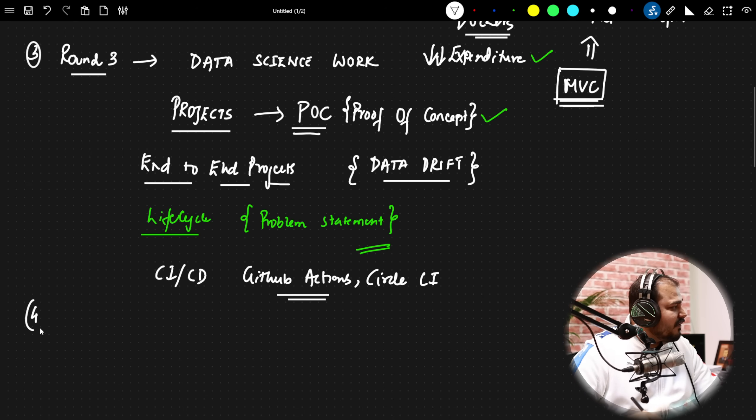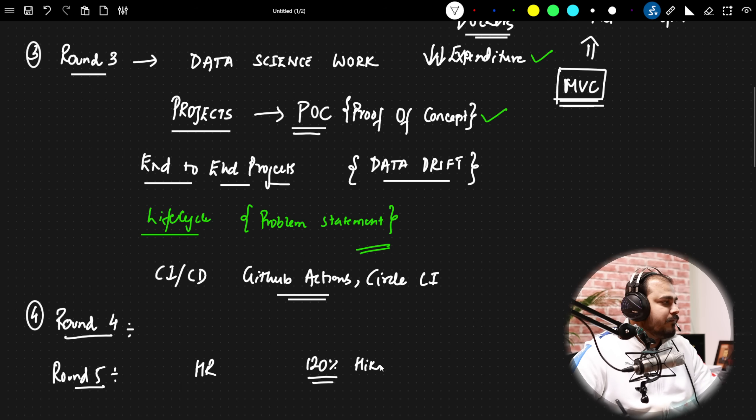Round 4 was a managerial round. Again, they asked about different kind of projects over here also. But it was most of a discussion stage. And finally, he got the confirmation from the HR in round 5. And the salary hike that he has got is somewhere around 120% hike. Amazon is an amazing company, and you will definitely be getting a good hike itself.